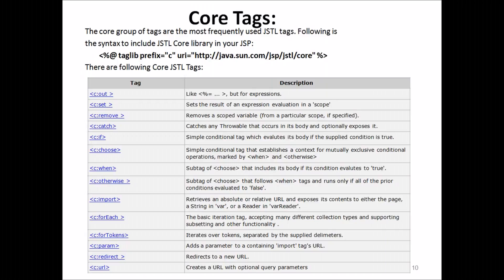The following core JSTL tags are available: set, out, remove, catch, if, choose, when, otherwise, import, forEach, forTokens, params, param, redirect, and url.